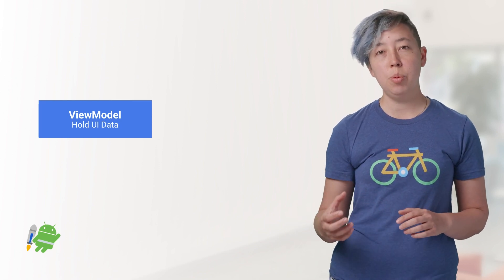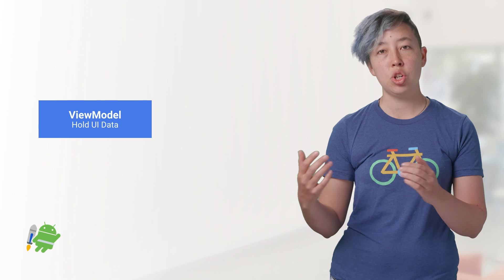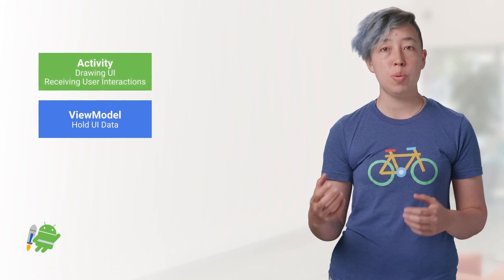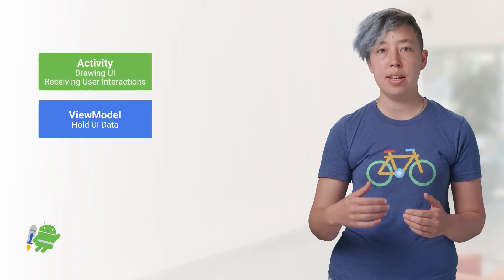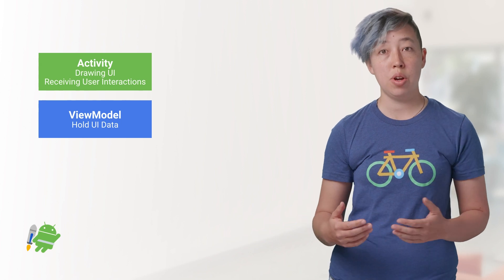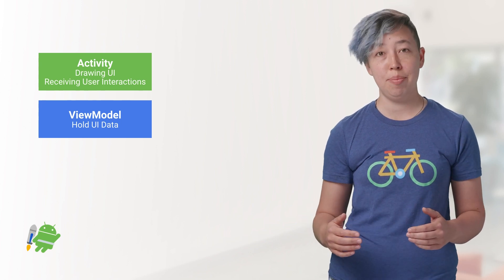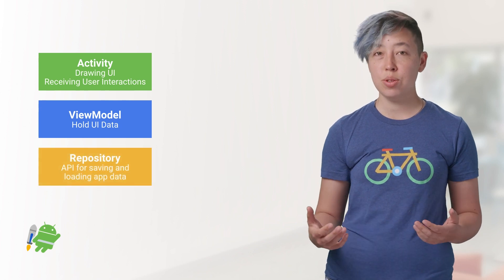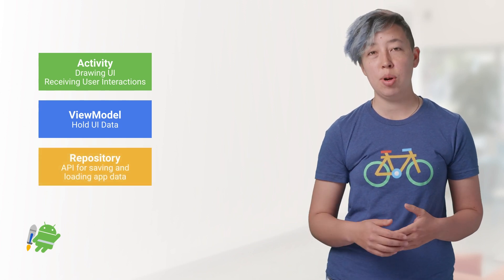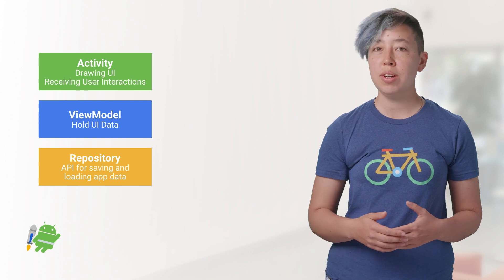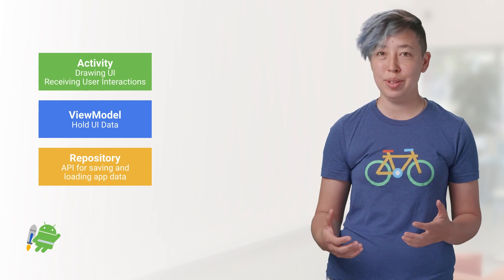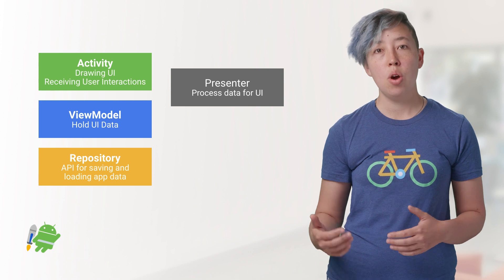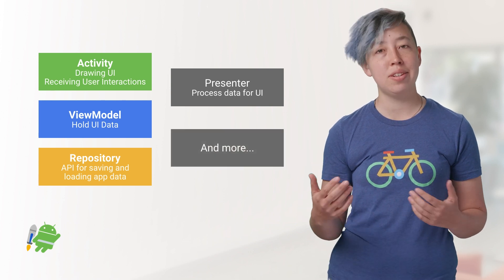The ViewModels will be responsible for holding all of the data that you're going to show in your UI, and then the activity is only responsible for knowing how to draw that data to the screen and receiving user interactions, but not for processing them. If your app loads and stores data, I suggest making a repository class as described in the guide to app architecture. Make sure your ViewModel doesn't become bloated with too many responsibilities.